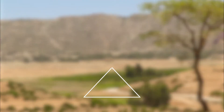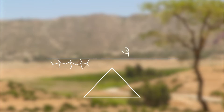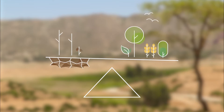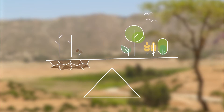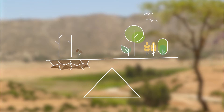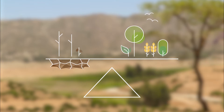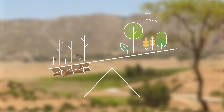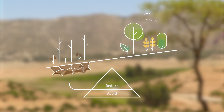Land degradation neutrality, abbreviated LDN, describes a world in which no land is lost to degradation at the bottom line. To achieve this, provident planning is key. The objective is to avoid degradation in the first place. When an intended land use has the potential to degrade the land, measures to avoid and reduce the anticipated degradation are planned and implemented.